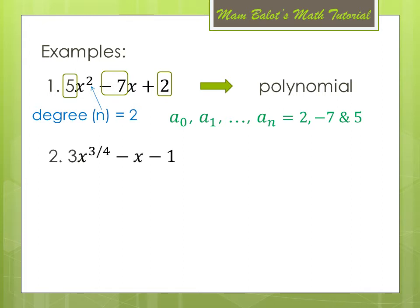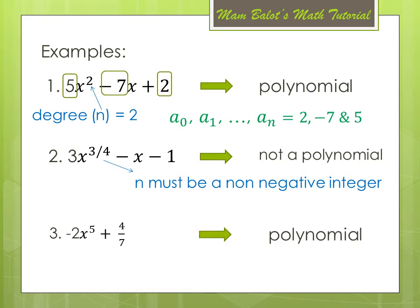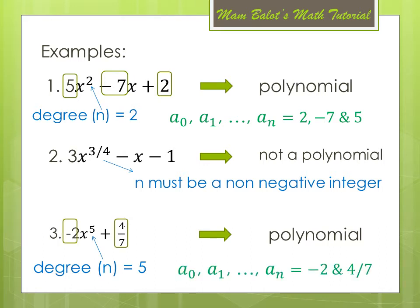Example number 2: 3x to the 3 fourths minus x minus 1. Is this a polynomial? Of course it is, because the degree of n must be a non-negative integer. Example number 3: negative 2x to the 5th plus 4 over 7. Is this a polynomial? Of course it is, because the degree here is 5 and we have the coefficients negative 2 and 4 over 7, which are real numbers.